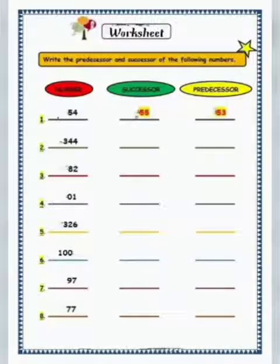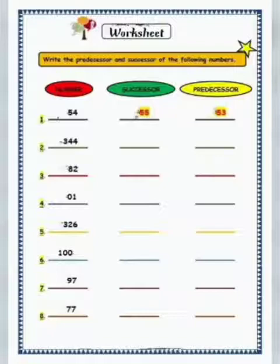Now you can write the successor and predecessor of a given number. The numbers are 54 — which is solved in front of you — then 344, 82, 1, 326, 100, 97, and 77. You have to write the successor and predecessor of these numbers on your own.